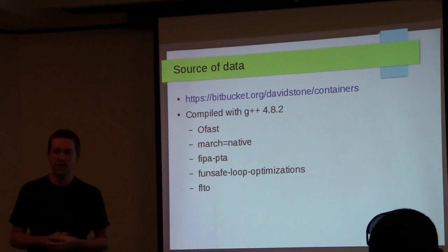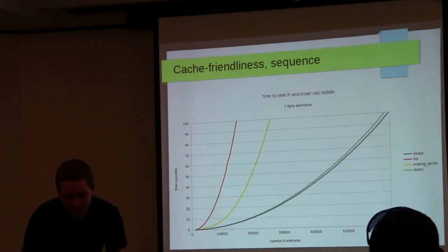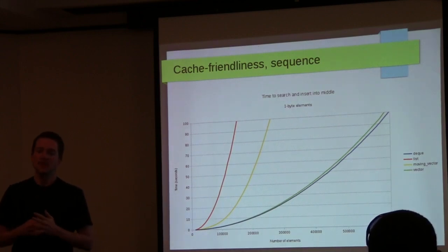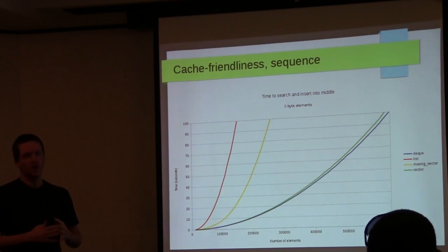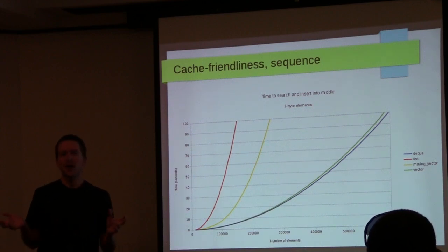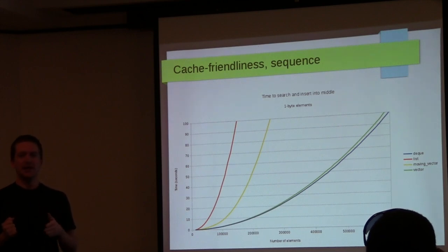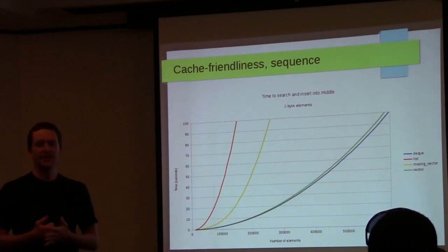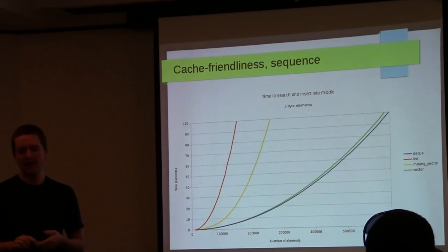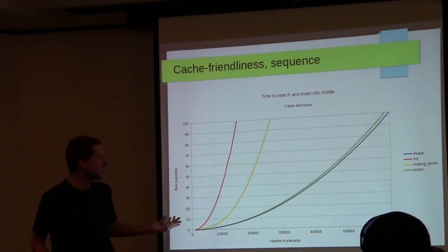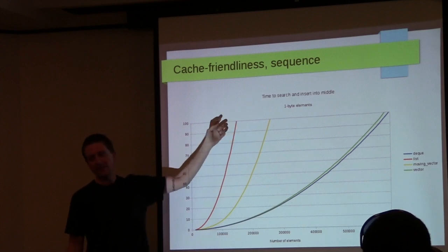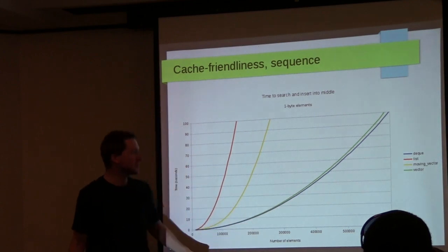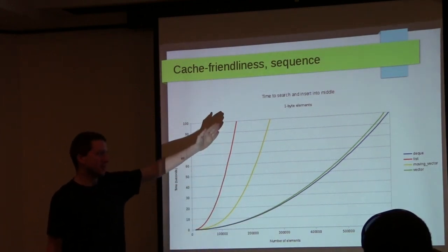The test was inspired by Bjarne Stroustrup's presentation comparing vector and list performance. He generated a large number of integers and inserted them into the container in sorted order, involving a linear search and insertion. For list: linear search, constant-time insert in the middle. For vector: linear search, insert in the middle, then shift all elements over. I repeated that test but varied the object sizes and added deque and the vector of unique_ptrs.